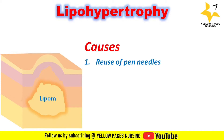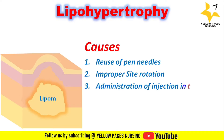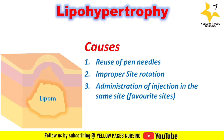The next cause is improper site rotation. Site rotation is important in insulin administration because it allows time for the skin to heal. When site rotation is not proper, there are more chances for insulin to be administered at the same site, and this leads to lipohypertrophy. The next cause is administration of injections at the same site or favorite sites.